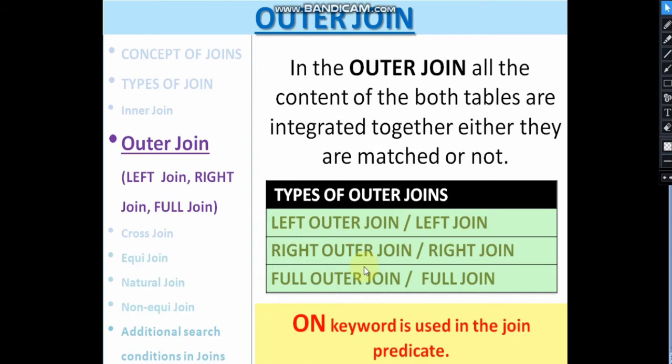Outer join is very interesting. Outer join integrates all content of both tables together, whether matched or unmatched. If they are unmatched, a null value is given. In inner join, unmatched rows were not shown; in outer join, they appear with null. Another important thing is the ON keyword — in outer joins, instead of WHERE, you use the ON keyword for the join predicate.